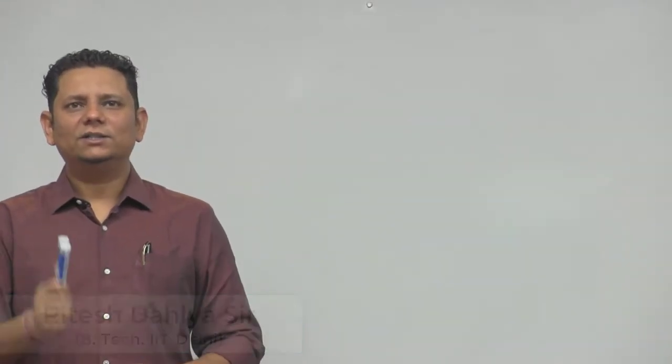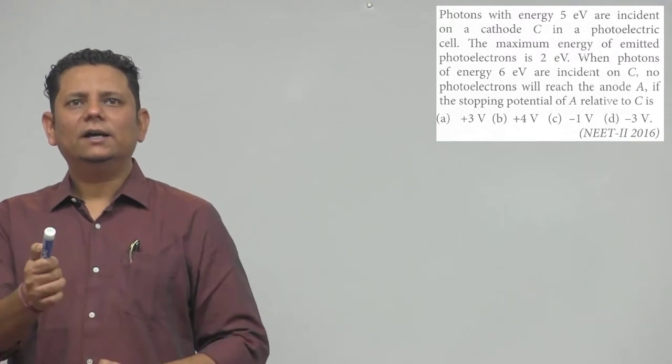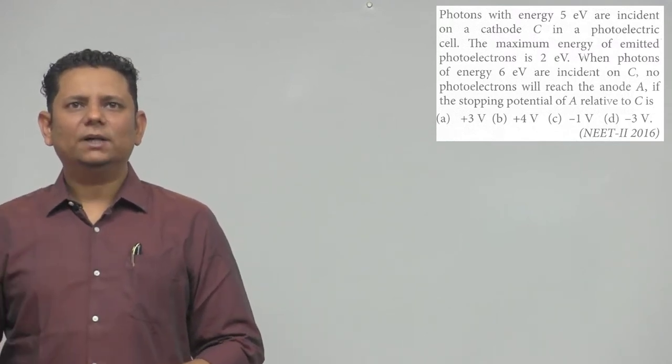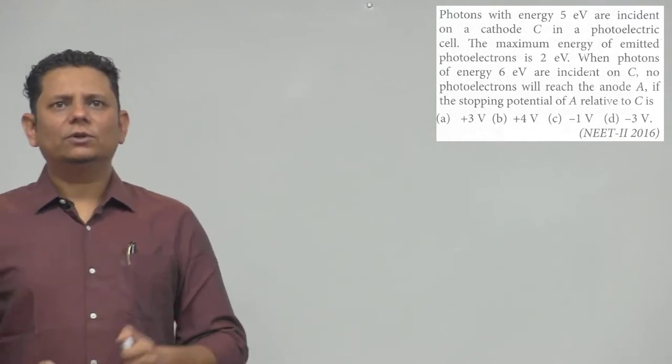The question says: photons of energy 5 electron volt are incident on a cathode C in a photo cell. The maximum energy of emitted photoelectrons is 2 electron volt. When photons